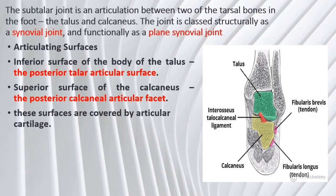The subtalar joint is an articulation between two tarsal bones: the talus and calcaneus. Structurally it is a synovial joint and functionally a plane synovial joint. The articulating surfaces are the inferior surface of the body of the talus (posterior talar articular surface) and the superior surface of the calcaneus (posterior calcaneal articular facet), both covered by articular cartilage. The true anatomical subtalar joint consists only of these surfaces, though some texts include the talocalcaneal part of the talocalcaneonavicular joint.